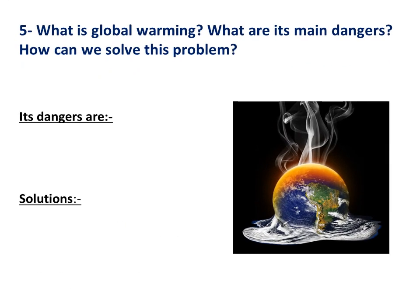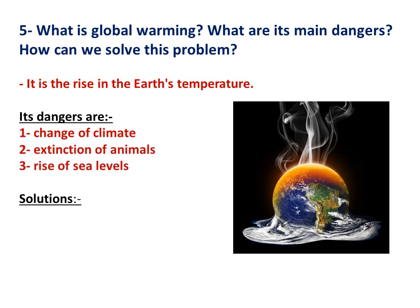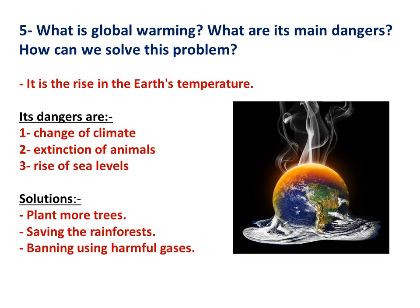Question 5: What is global warming? What are its main dangers? How can we solve this problem? Global warming is the rise in the earth's temperature. Its dangers are change of climate, extinction of animals, and rise of sea levels. Solutions: plant more trees, saving the rainforests, and banning the use of harmful gases.